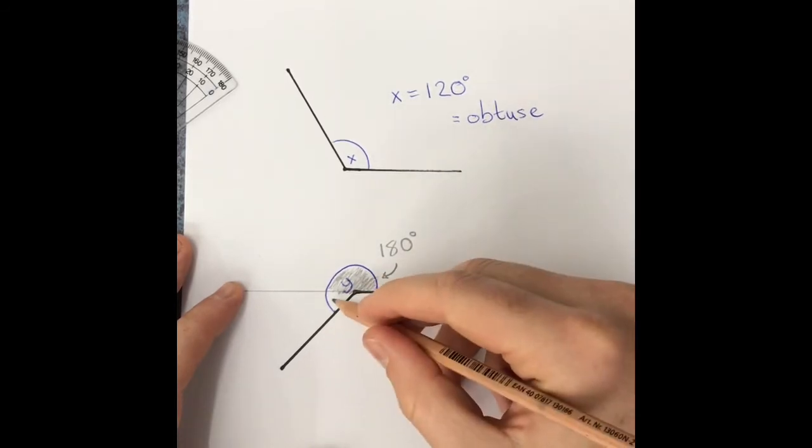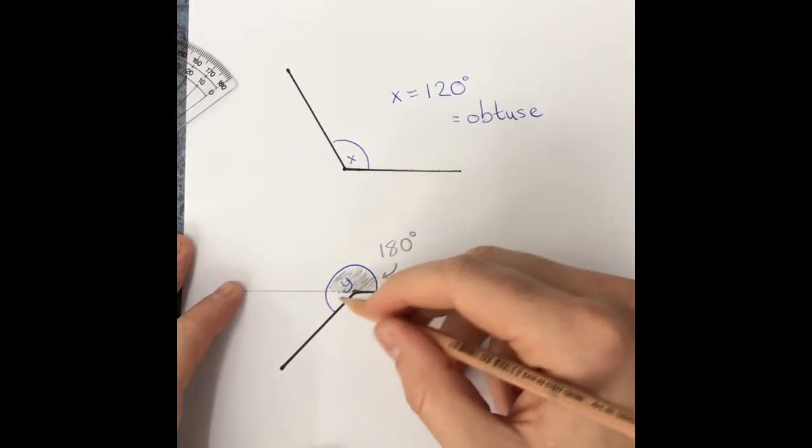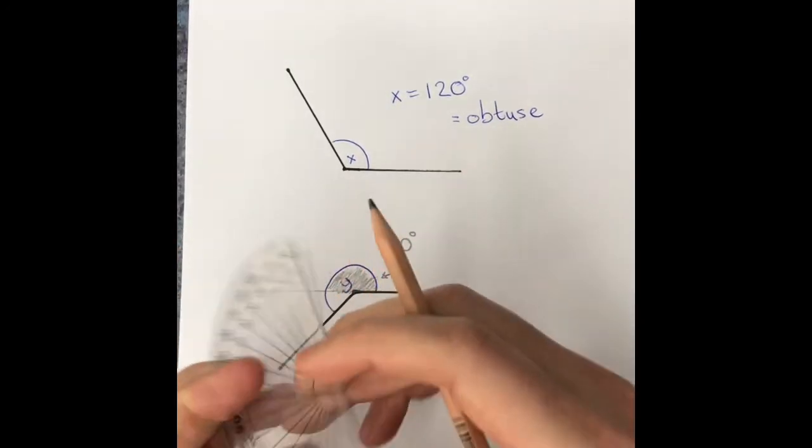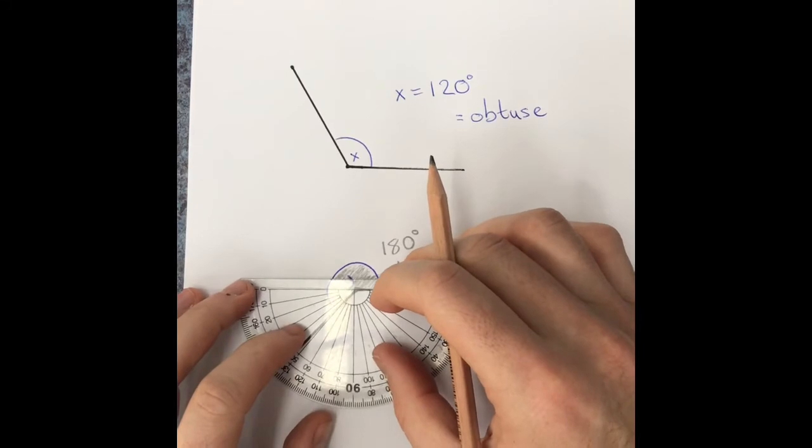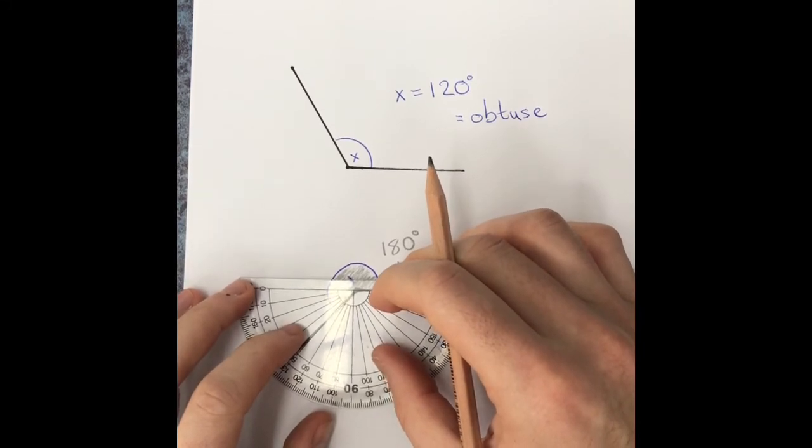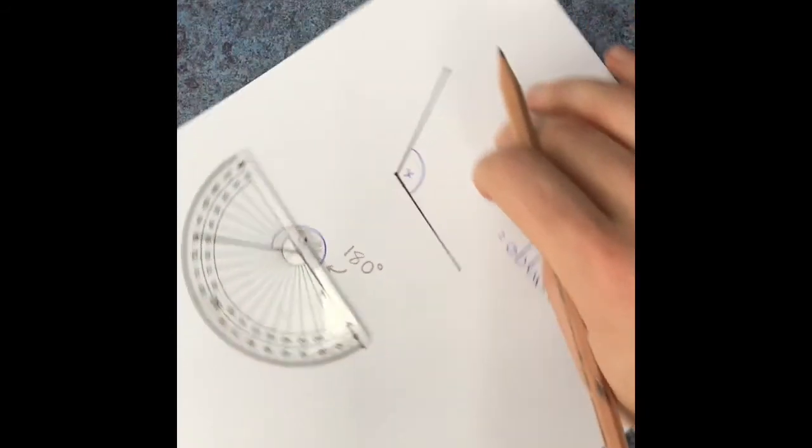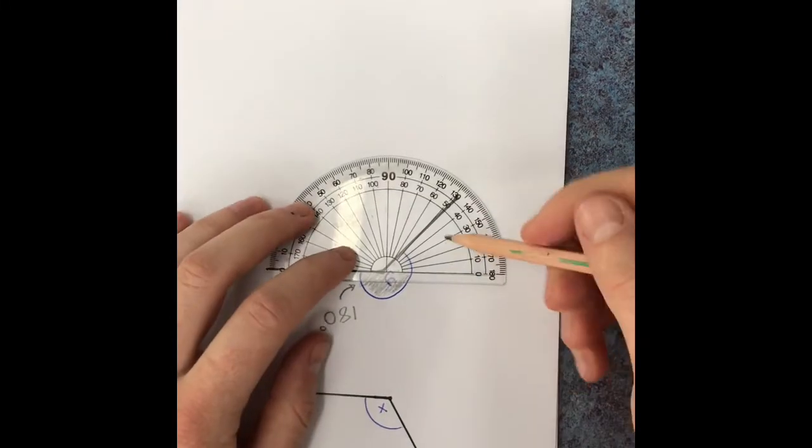And I still need to find this part here. So I'm going to line up my protractor to go along that line. I could do it like this, but to make it easier for myself, I'm going to turn it around and measure this way.